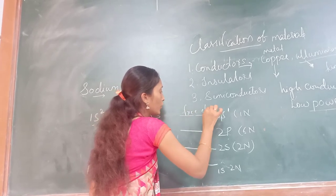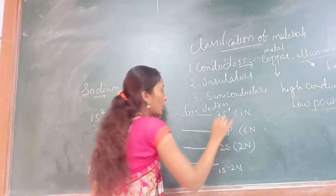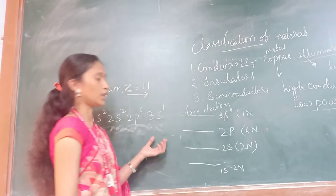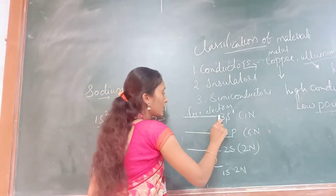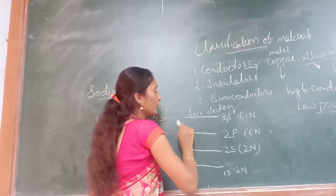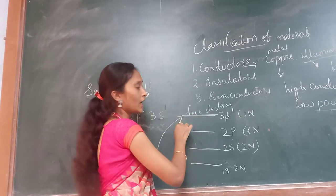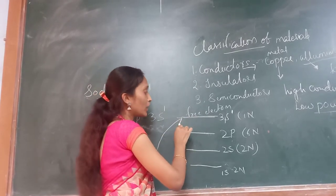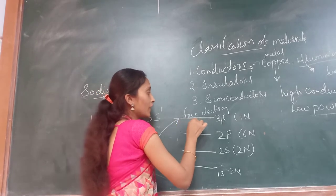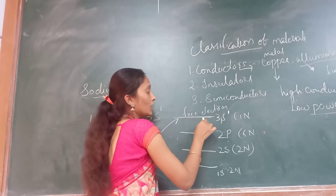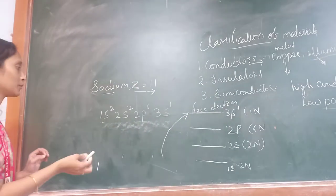If there is a free electron in the outermost shell, that electron is free. If we give an external thermal energy — if we apply thermal energy to an atom — then this free electron tries to jump into another atom.